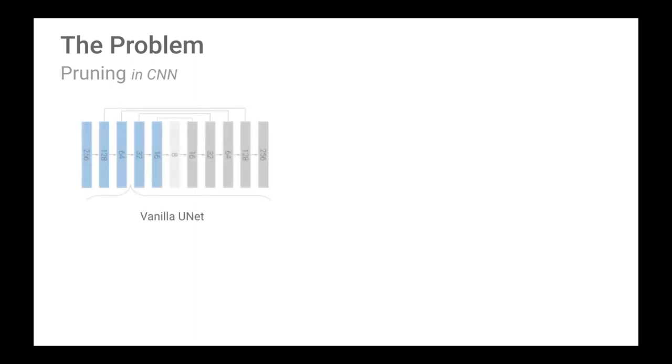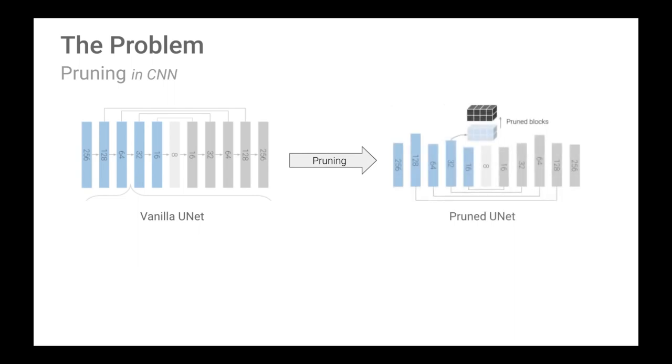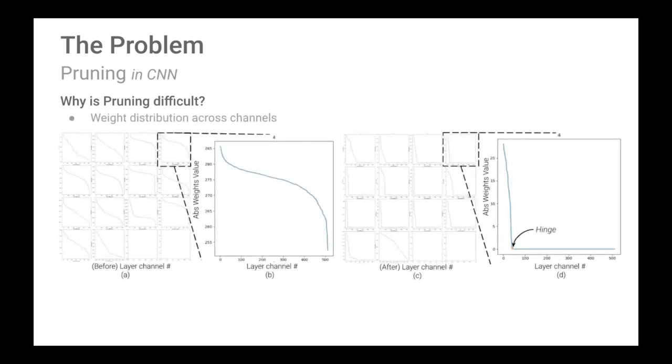For example, given an encoder-decoder like model U-Net, we have to find channels and remove them along with incoming and outgoing connections, making sure that performance remains nearly the same. But why is this problem difficult? Shouldn't it be as easy as removing last K percent of channels across every layer or training a smaller model from scratch or training classification-based pruning methods for conditional image generation tasks?